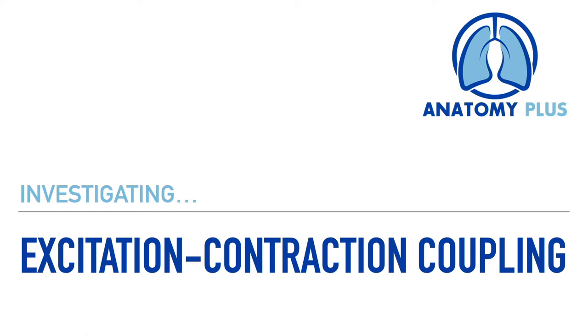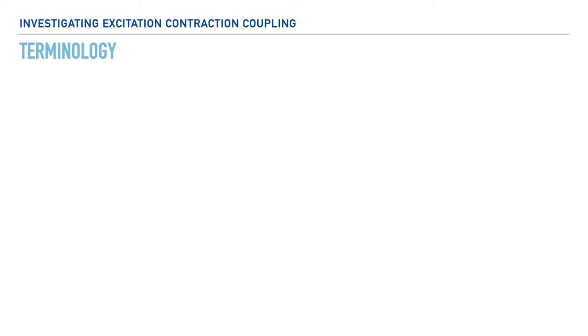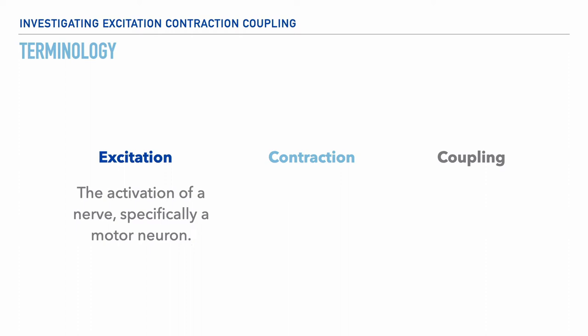And it's this process which describes the interaction between the nervous system and the plasma membrane of the skeletal muscle fiber. This process is referred to as excitation-contraction coupling, where excitation refers to the stimulation and or activation of a nerve, specifically a motor neuron.